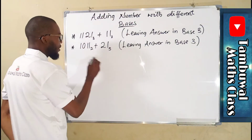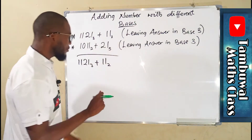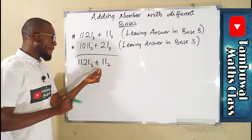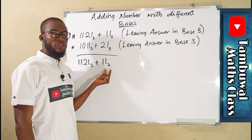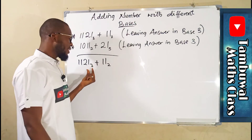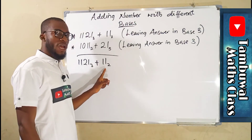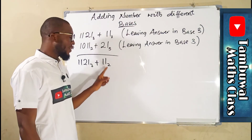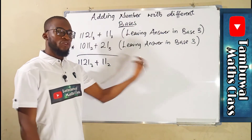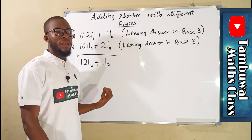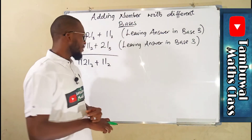In the first question, we are asked to add 1121 in base 3 plus 11 in base 2, and leave the answer in base 3. Since one of the components is already in base 3, we can transform the other part to base 3, then add them together. So we have to transform 11 in base 2 to base 3. We first convert it to base 10, then from base 10 back to base 3, as we have seen in our previous lesson.